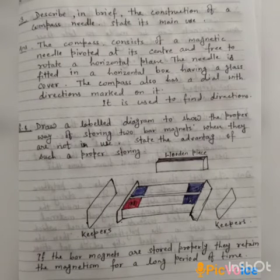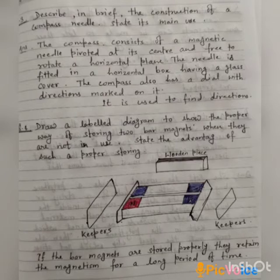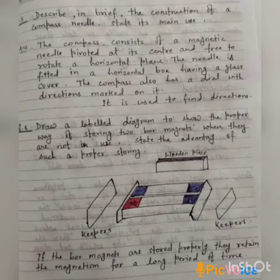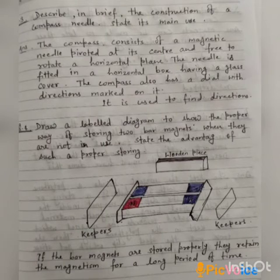Question number four: draw a labelled diagram to show the proper way of storing two bar magnets when they are not in use, and state the advantage. The diagram showing the storing of bar magnets is shown on the screen. The advantage is that if bar magnets are stored properly, they retain their magnetism for a long period of time.